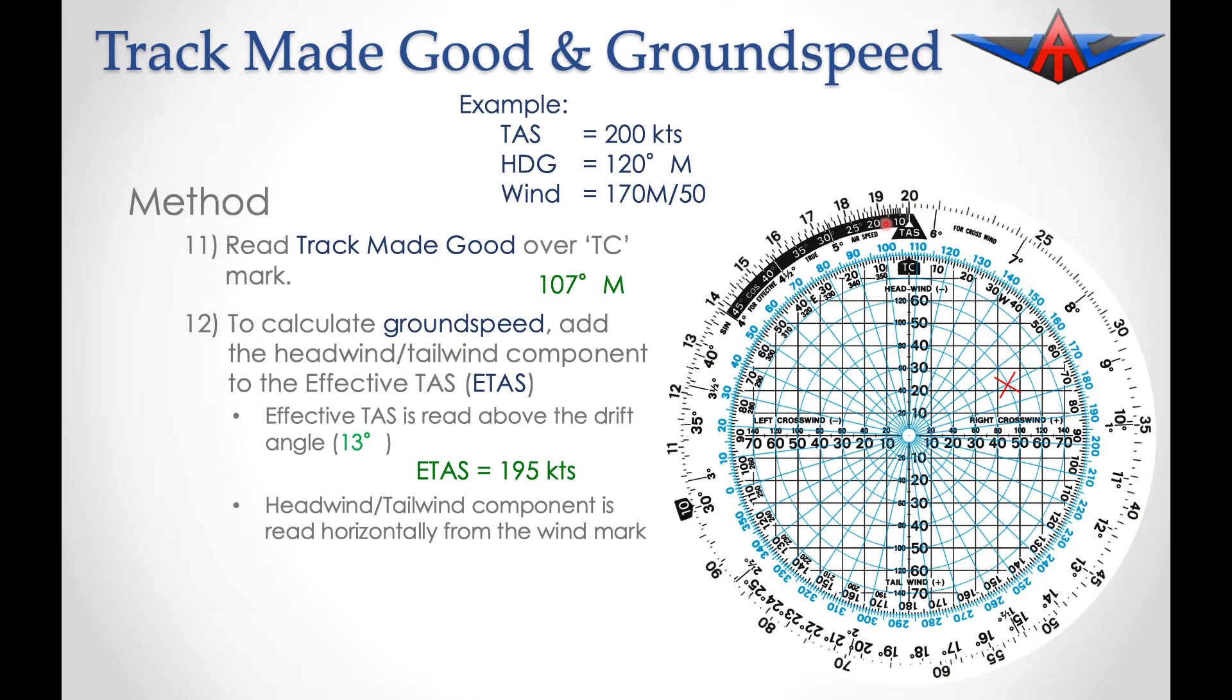We now read our head or tailwind component. In this case, we're going to read horizontally across from the X, and we have a wind component of minus 23. A headwind is a minus component. A tailwind is a positive component. So we have minus 23 knots as our wind component.